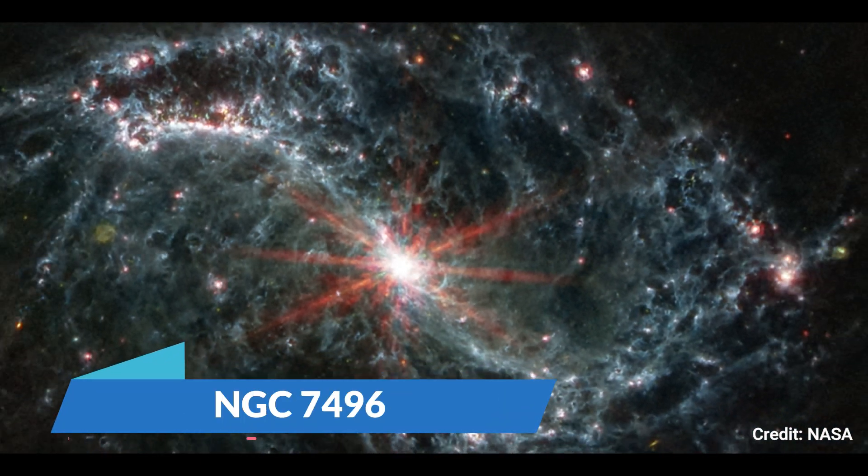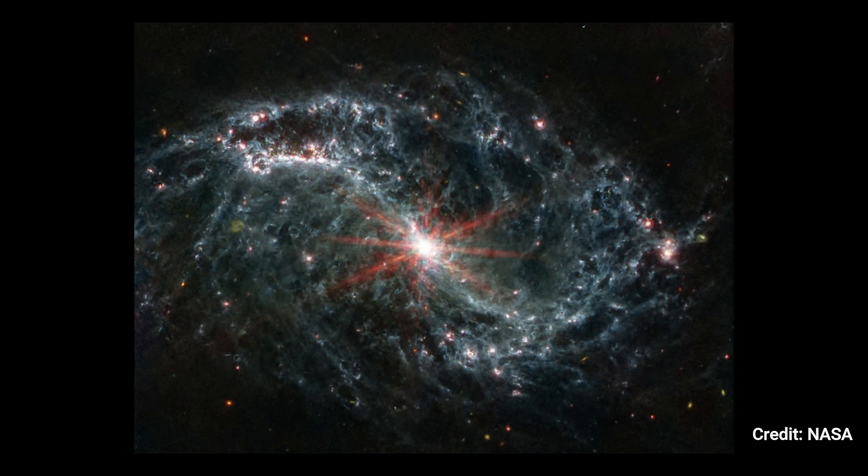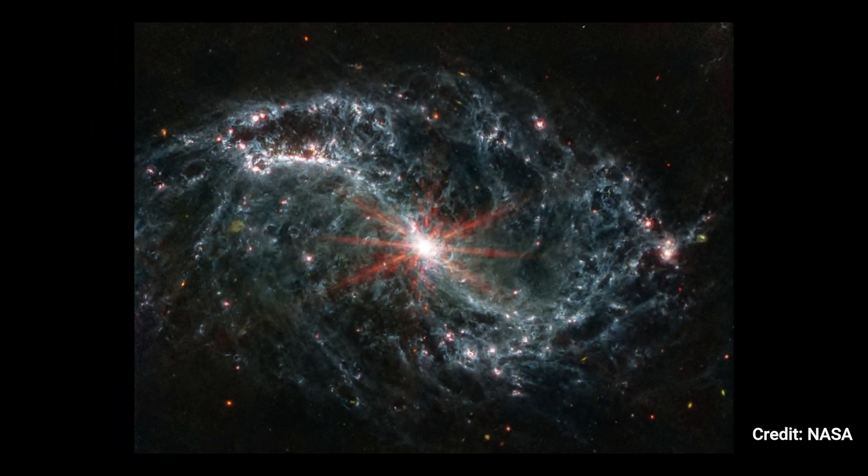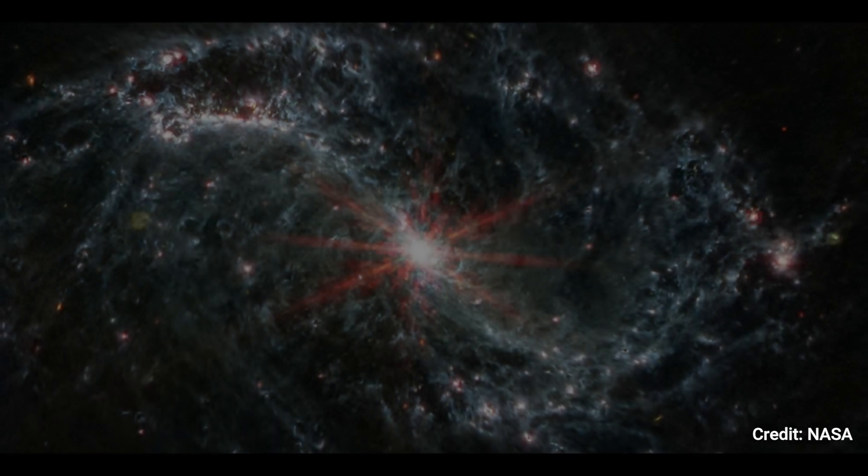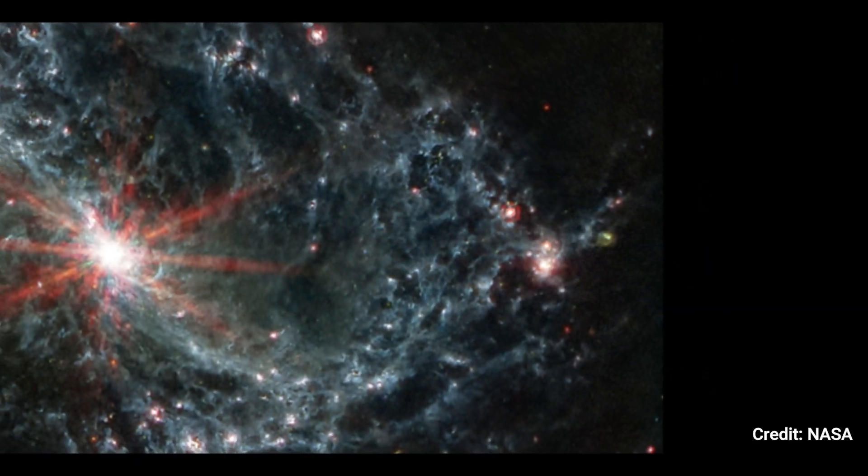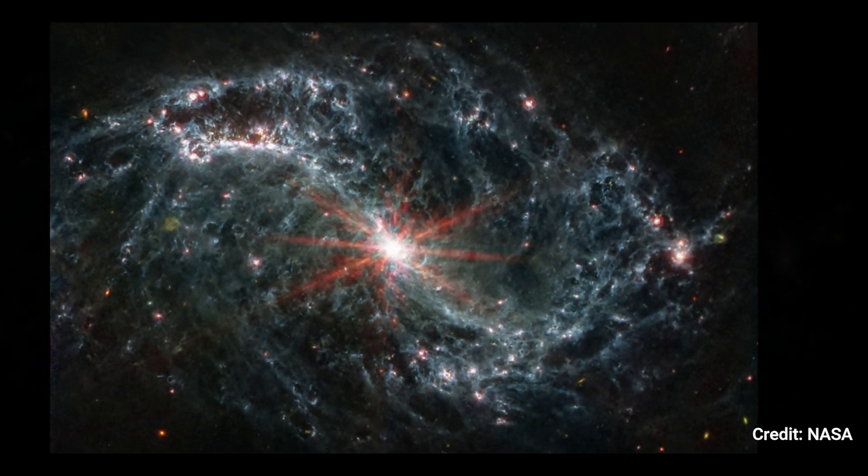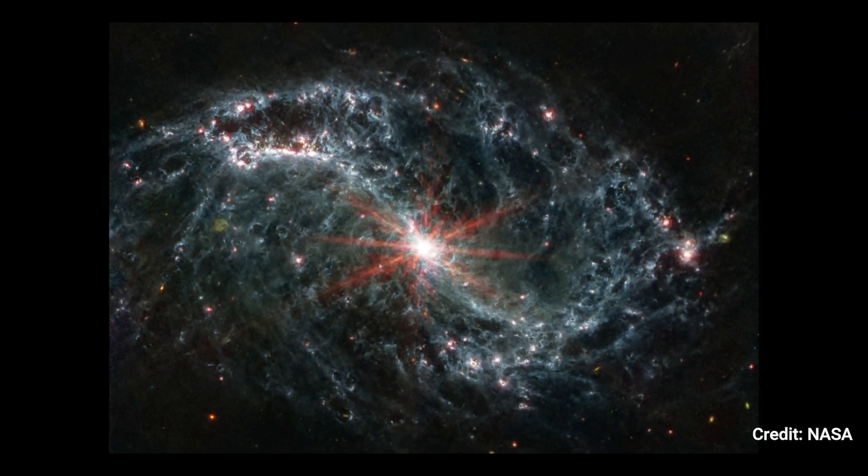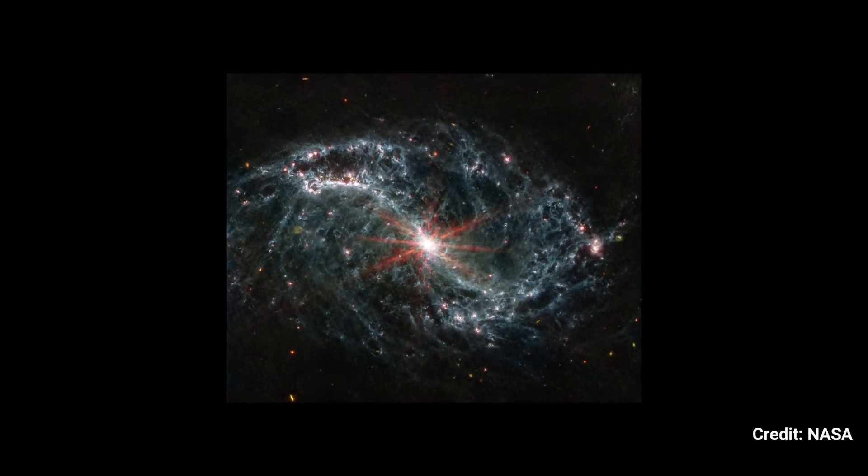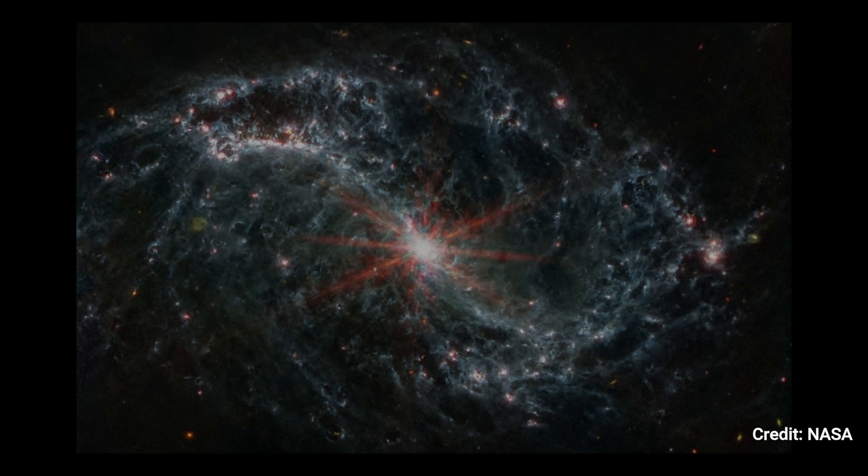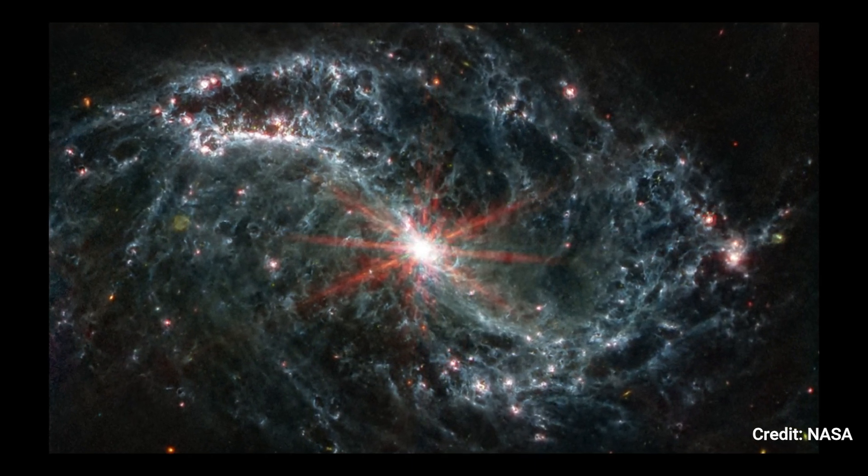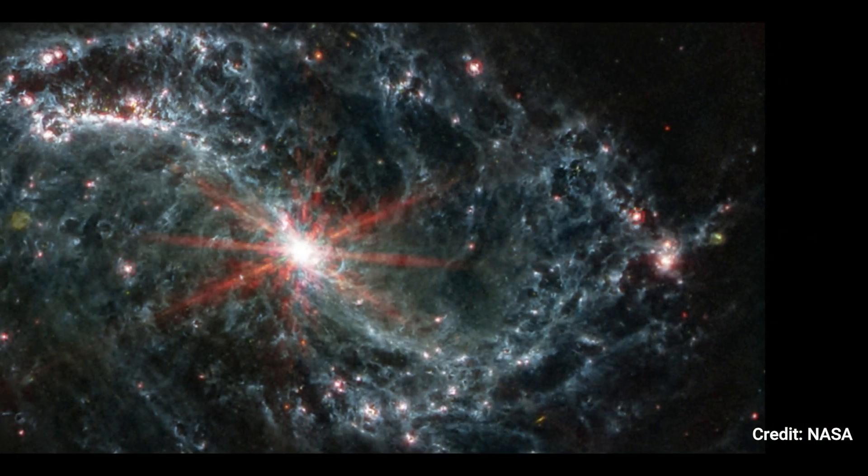Number 4: NGC 7496. Scientists are receiving their first look at how the creation of newborn stars affects the history of surrounding galaxies using NASA's James Webb Space Telescope's extraordinary resolution. In this view from Webb's mid-infrared instrument MIRI, the spiral arms of NGC 7496 are packed with cavernous bubbles and shells overlapping one another. These filaments and hollow cavities are evidence of young stars releasing energy and, in some cases, blowing out the gas and dust that surrounds them in the interstellar medium.